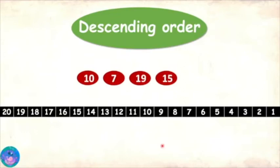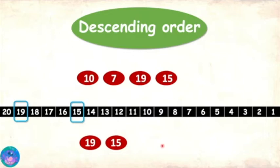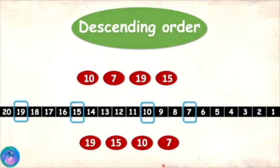I'm going to give you four numbers: 10, 7, 19, and 15. I'll start from 20 — so 20, 19... I'll write that first. 18, 17, 16, 15, so 15 comes next. 14, 13, 12, 11, 10, so 10 comes next. 9, 8, 7, and that comes last. So I have arranged the numbers in descending order: 19, 15, 10, and 7.